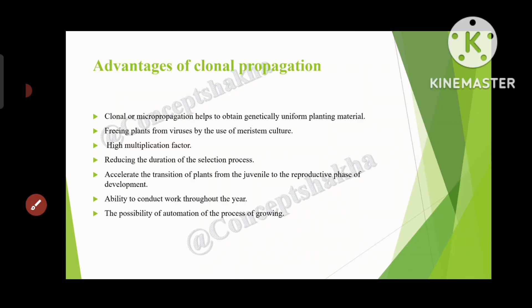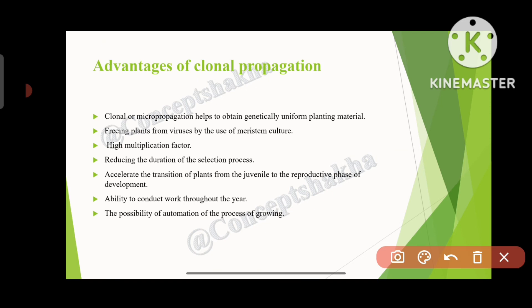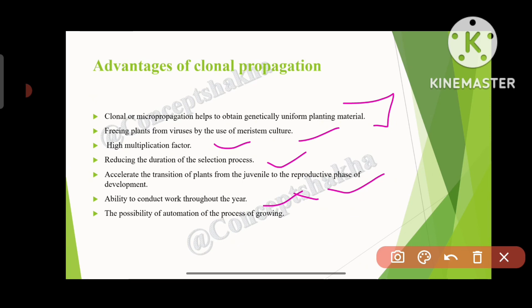What are the advantages of clonal propagation? It helps to obtain genetically uniform planting material. It allows freeing plants from viruses by use of meristem culture. The multiplication factor is much higher. It reduces the duration of the selection process. It accelerates the transition of plants from the juvenile to the reproductive phase. It provides the ability to conduct work throughout the year because everything is done under controlled conditions, with no specific season requirement. There is also the possibility of automation of the growing process.